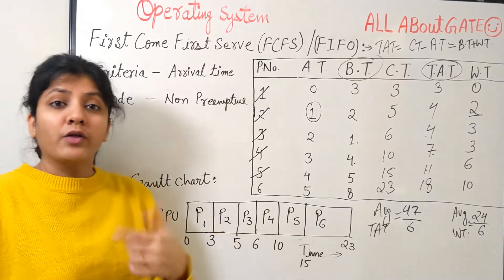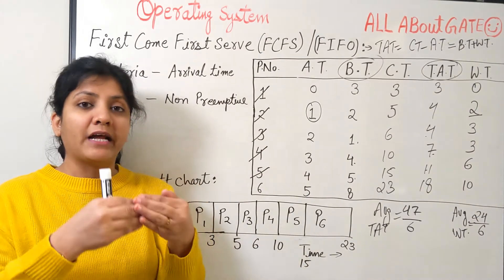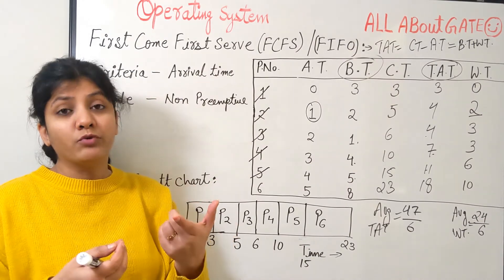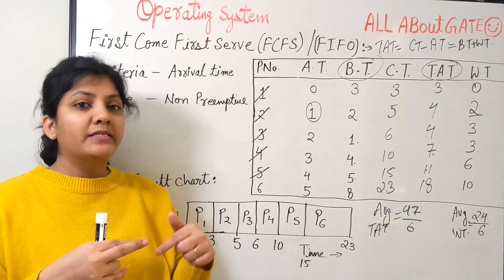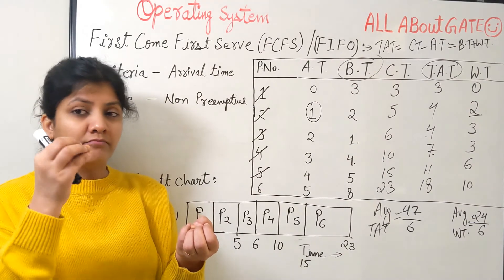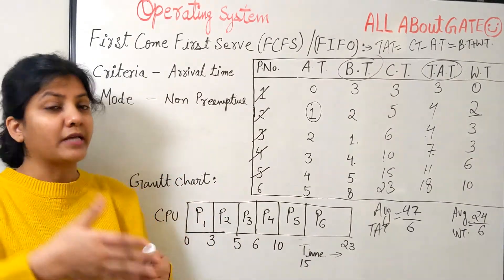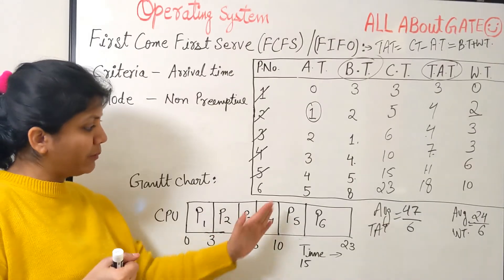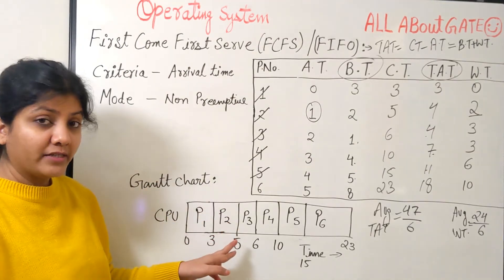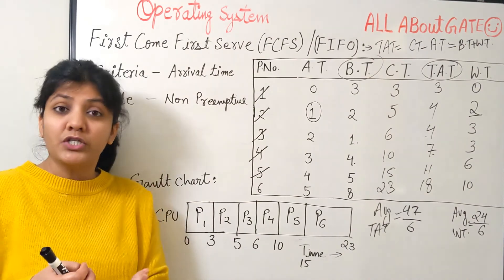If all processes arrive at the same time, the question usually specifies how to handle ties. If not stated, we default to lower process ID first — so P1 before P2 and so on. Also note: switching between processes involves a context switch. We ignore context switch overhead unless the question explicitly says to include it.